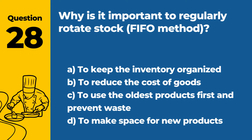Question 28. Why is it important to regularly rotate stock? FIFO methodology. a. To keep the inventory organized. b. To reduce the cost of goods. c. To use the oldest products first and prevent waste. d. To make space for new products. Answer c. To use the oldest products first and prevent waste. Regularly rotating stock using the FIFO (first in, first out) method is important to use the oldest products first, which helps prevent waste and ensures food safety.